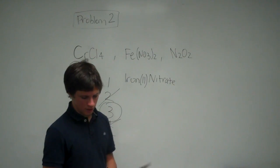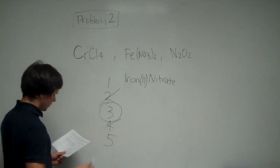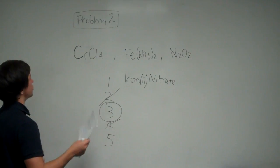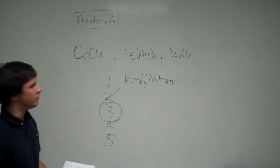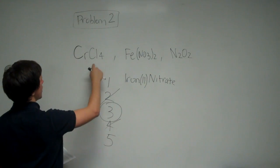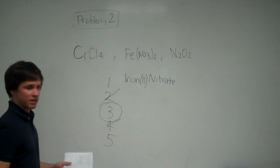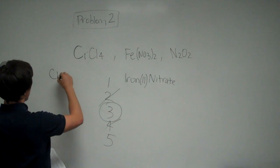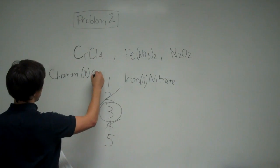Now I'll just explain the names of the other two. This is chromium chloride, some kind of chromium chloride. Like I said earlier, chromium is a transition metal, so you have to specify the charge. Now chlorine has a charge of negative one, so this side of the compound is going to have a negative four charge. To balance that out, the chromium has to have a positive four charge. So this is chromium (IV) chloride.